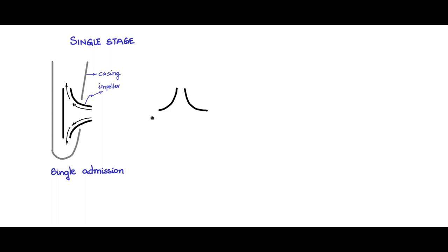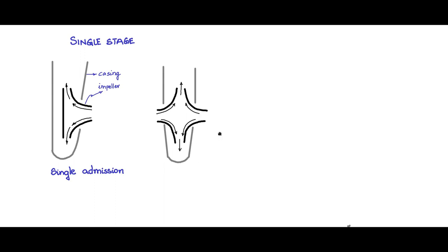You also have double admission — the impellers look like this, and water can be admitted from both sides. Water comes out because of the pressure difference between the center and the outer periphery — centrifugal force pushes it out. Double admission is more advantageous because water admitted through both ports balances the impeller wheel, reducing impact on the bearings.